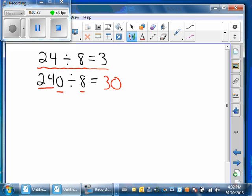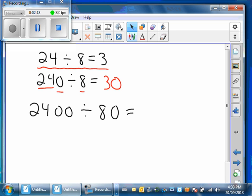What happens if we bump this up and say 2,400 divided by 80? We're going to cancel some zeros here. The way we do that is first we say, what is 24 divided by 8? In that case, it's 3.